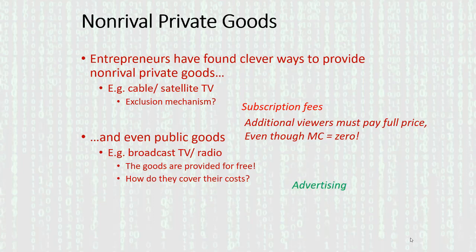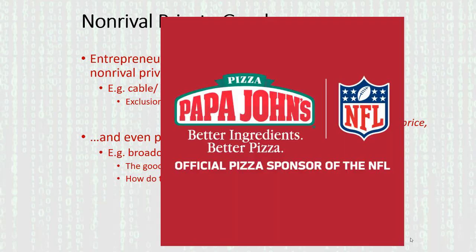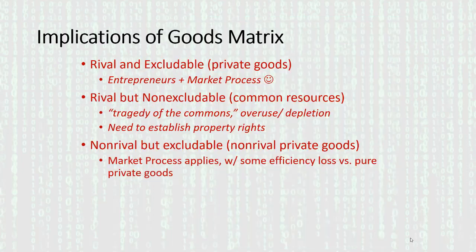With broadcast TV — antenna-style TV — goods are provided for free, the signal sent out for anyone to pick up. How do broadcasters cover their costs? Through advertising. Papa John's is the official sponsor of the NFL — sponsorships are attached to the broadcast, so you have to sit through the ads when you're consuming that particular product.